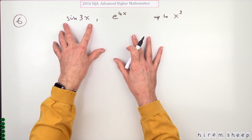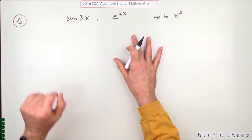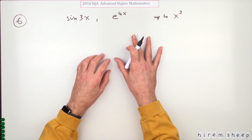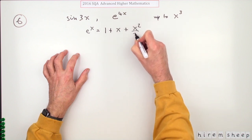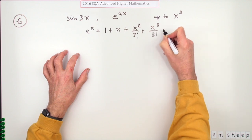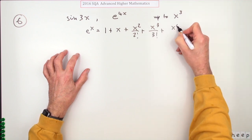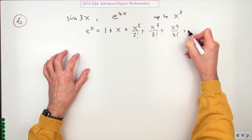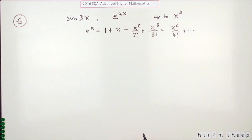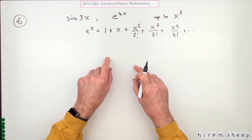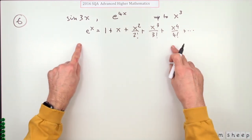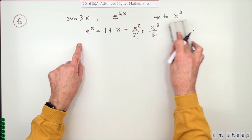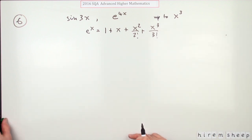Now there's two techniques. You can just start from scratch and find expressions for the derivatives and then evaluate at zero. Or you could remember that E to the X is 1 plus X plus X squared over 2 factorial plus X cubed over 3 factorial, up to X to the 4 over 4 factorial and so on. Because if you remember that, just stating that would have been worth a mark, worth remembering.